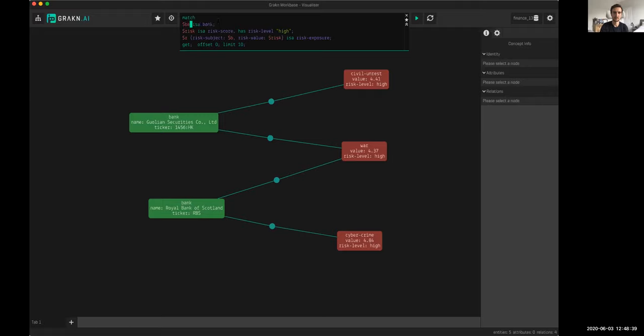The way we write that in Grakel—this is our language. We say match because it's a query, we're fetching data. This is like a select query in SQL. We're saying $B is a bank—the dollar sign denotes the variable name. Then we say $risk is a risk score with risk level high. We're saying give me an entity type called risk score that has an attribute type called risk level with the value high, and this is a string.